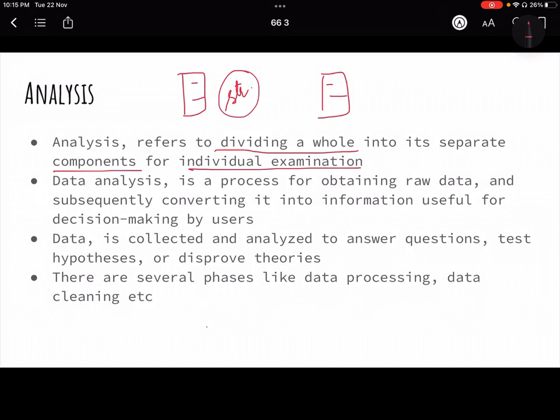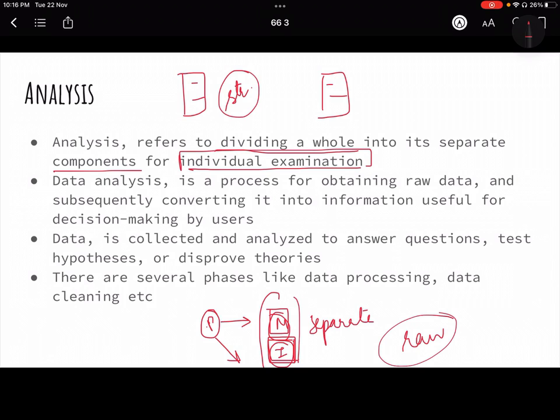For example, my hypothesis is how poverty is related to malnutrition and illiteracy. Malnutrition data I will collect in one place, illiteracy data I will collect in another place. I have separated it. Data was collected together in raw form from my respondents - I must have collected both kinds of data, both malnutrition and illiteracy. But then I will separate it because I have to develop individually the relation or correlation. I will separate and individually examine.